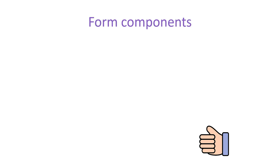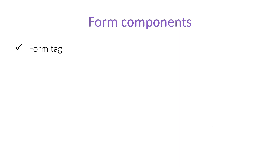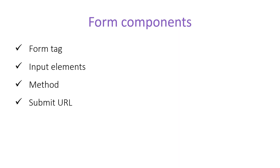Before creating a new form in ASP.NET Core, let's understand the core components of a form. First, we need to create a form tag, which can be created in HTML. Then we need some input elements — text area, text box, calendar, radio button, etc. — and we can use any of them as needed. Then we need a method, a submit URL indicating where the form will be submitted, and a submit button which sends our data from the client to the server. Let's open Visual Studio and create a new form.